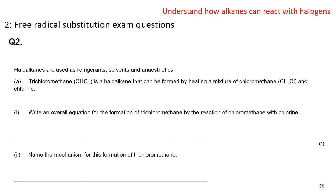A second sort of question is this longer form question where there are several different parts to it. Haloalkanes are used as refrigerants, solvents, and anesthetics. Trichloromethane is a haloalkane that can be formed by heating a mixture of chloromethane and chlorine. The first part asks you to write an overall equation for the formation of trichloromethane by the reaction of chloromethane with chlorine. An overall equation is just a standard equation — you don't need to put in initiation, propagation, or termination; it's what goes in at the front and what comes out at the end. We have our reactants already stated, so we can write those in.